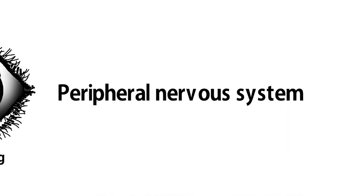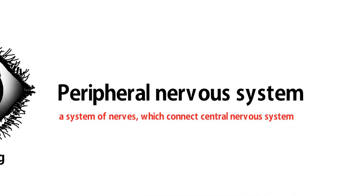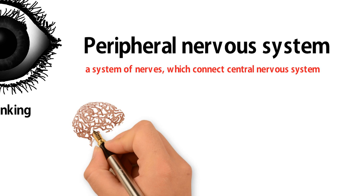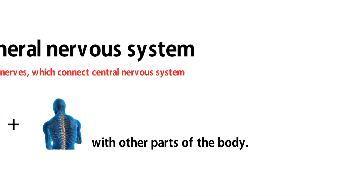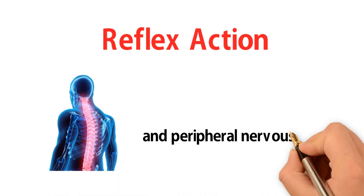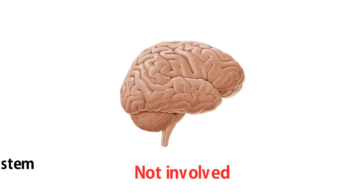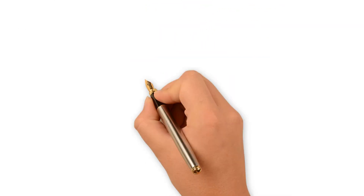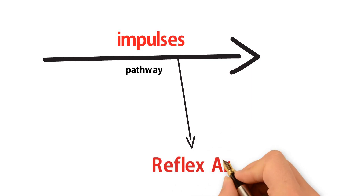The peripheral nervous system, PNS, is a system of nerves which connects the central nervous system, CNS — which includes the brain and spinal cord — with other parts of the body. Reflex action is the result of coordination of the spinal cord and peripheral nervous system. This action does not involve the brain. The pathway in which impulses travel during reflex action is called a reflex arc.